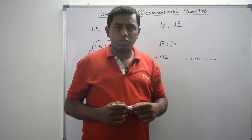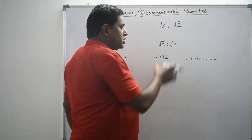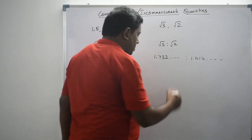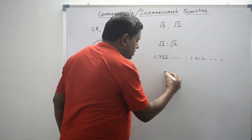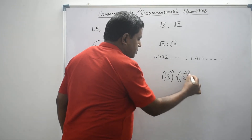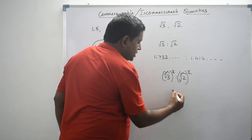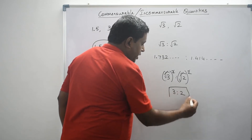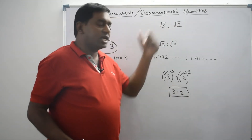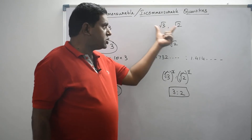Students may ask: can't we easily express square root of 3 and square root of 2 as integers by squaring both terms? Let's do that. When we square both terms, the square root and the power of 2 cancel, giving us 3 is to 2. Here both terms are integers, so it seems we have expressed the quantities as a ratio of integers and could call them commensurable.